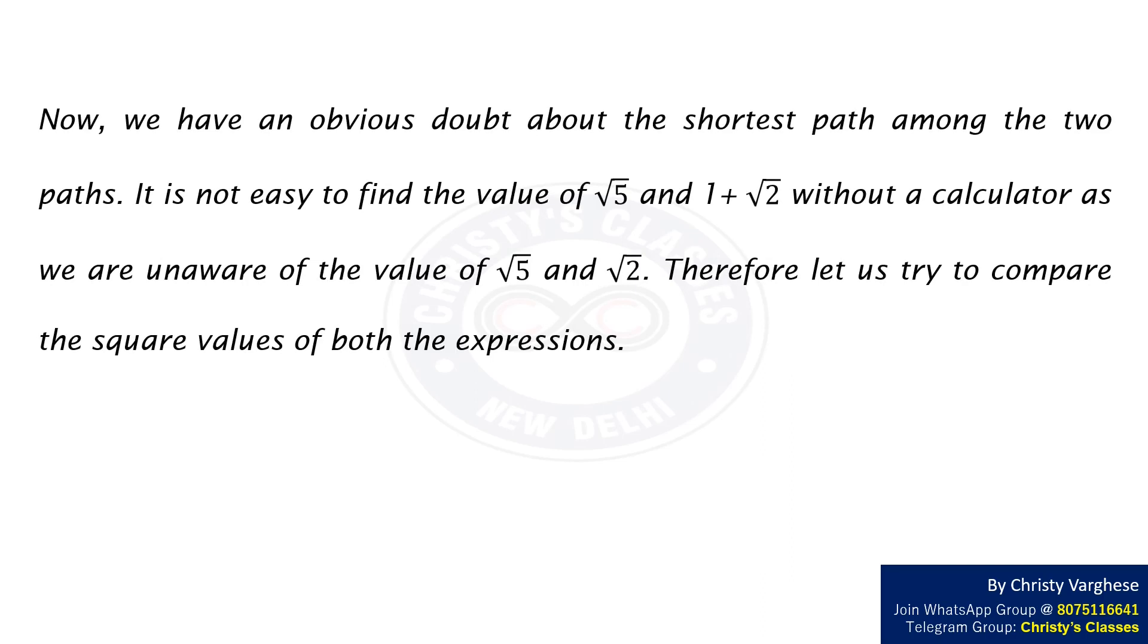Now we have an obvious doubt about the shortest path among the two paths. It is not easy to find the value of √5 and 1 + √2 without a calculator as we are unaware of the exact values. Therefore let us try to compare the square values of both expressions.